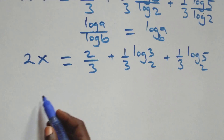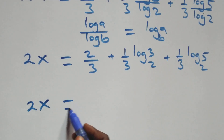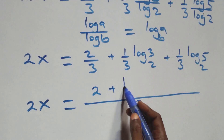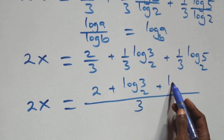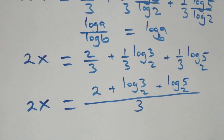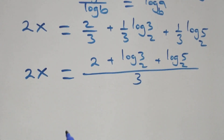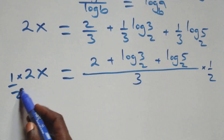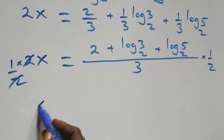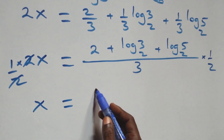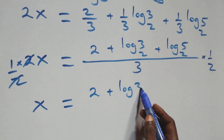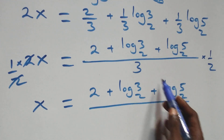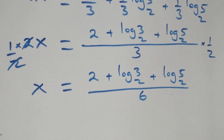And here we bring this together as one fraction. We have 2x equals to the same — here as 3, and we have two plus log 3 base 2 plus log 5 base 2, all over three. Next step, multiply both sides by one over two. At this, two cancels each other and we have x equals to two plus log 3 base 2 plus log 5 base 2, all over three times two, which is six.